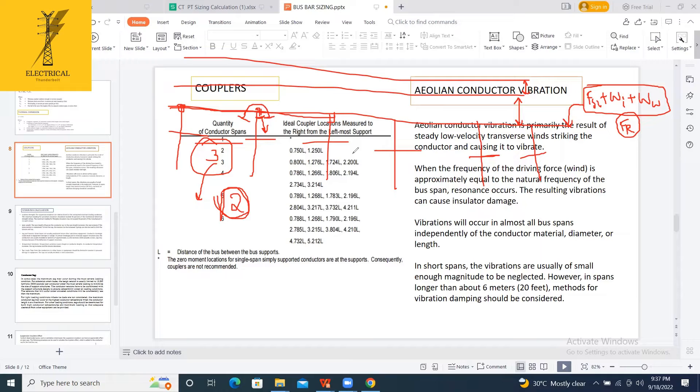I concluded the sizing calculation of the rigid busbar. See, rigid busbar sizing, generally outside, they will only calculate the aluminum tube. That's it. They won't calculate all these things. They generally go ahead with 3 meter spacing, 4 meter spacing. Based on past projects, they are moving ahead. But the actual way of doing rigid busbar sizing is this.